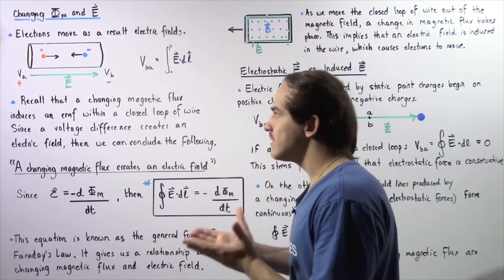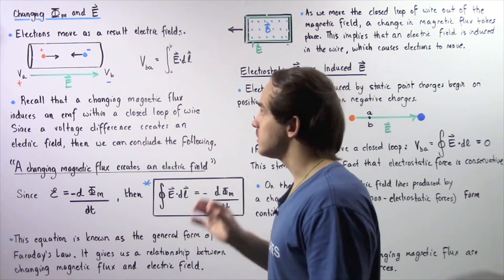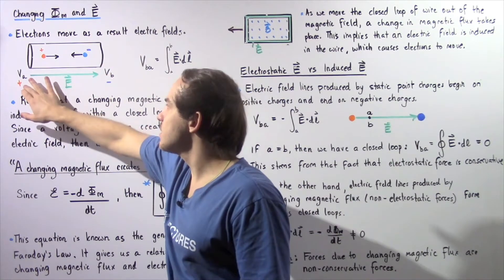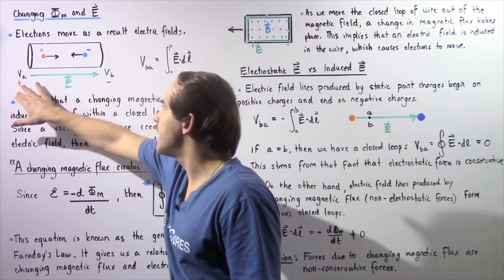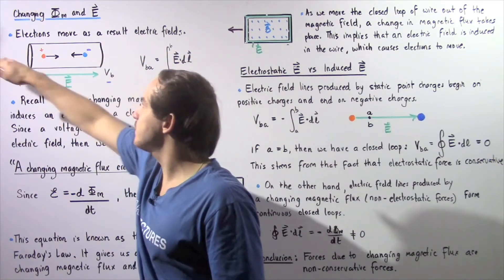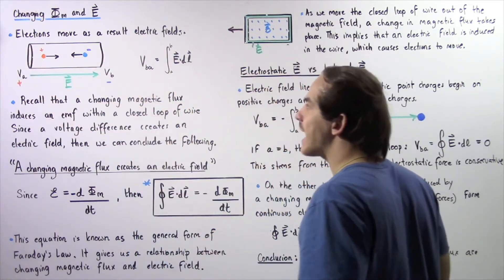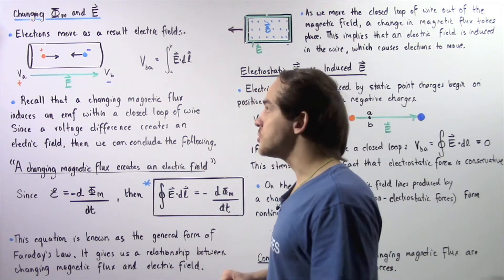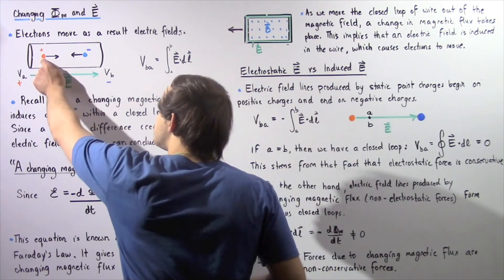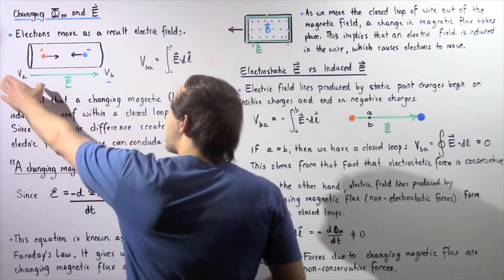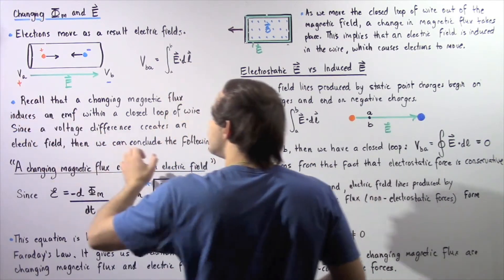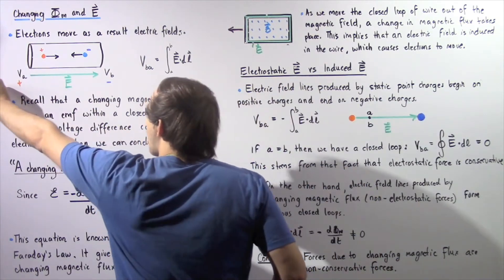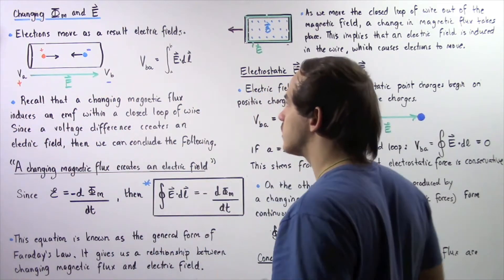Our negatively charged particles essentially flow from the lower potential, the negative end, to the higher potential, the positive end. So they flow in the negative direction along the x-axis. At the same time, our electric current, which is assumed to have a positive charge, flows from the higher potential, the positive end, to the lower potential, the negative end. So it travels along the electric field lines.